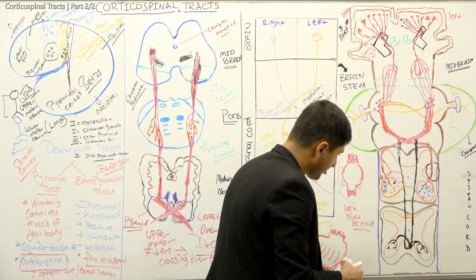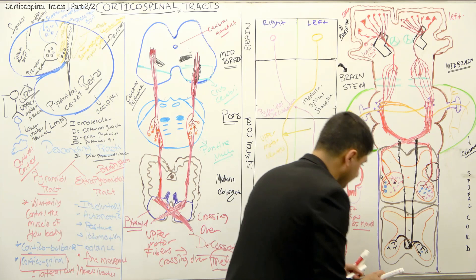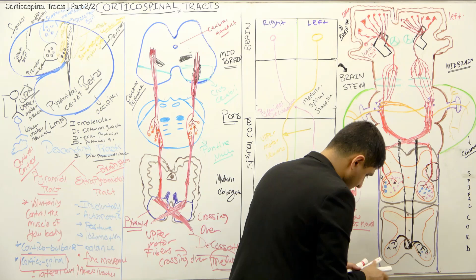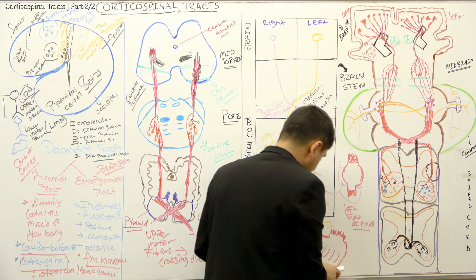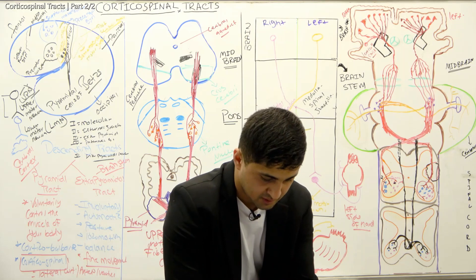At those lower spinal cord levels, there are also alpha motor neurons and gamma motor neurons that receive input from the anterior corticospinal tract fibers after they cross at the spinal cord.